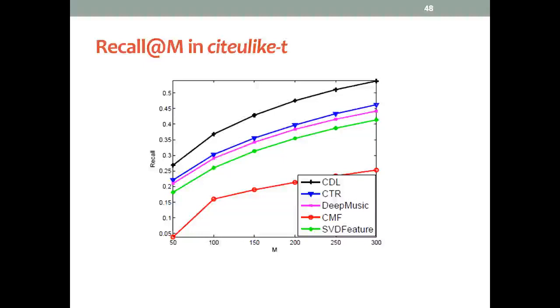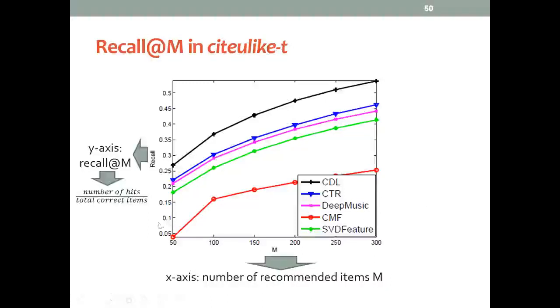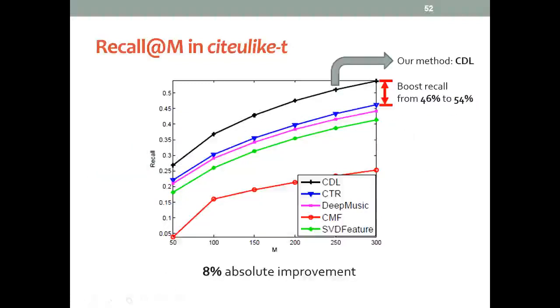This is the Recall for different methods in one of the datasets. M here is the number of recommended items, and the vertical axis shows the Recall. We can see CTR and DeepMusic are the best baselines. Here, CTR is just some shallow graphical model that combines matrix factorization and latent Dirichlet allocation, LDA.